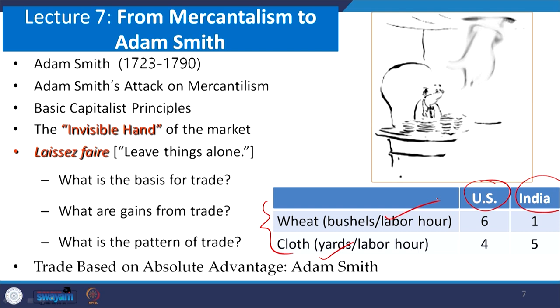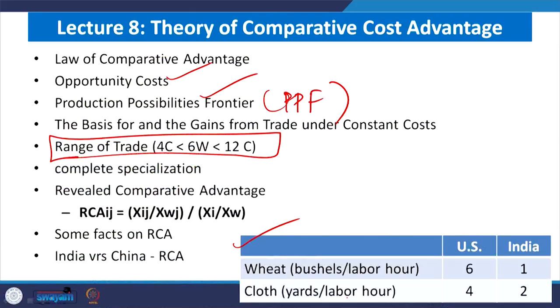In lecture number 8, as part of week number 2, we emphasized comparative cost advantage by David Ricardo. We talked about opportunity cost in detail and emphasized the production possibility frontier. We derived the diagram and placed the differences. From the example, you can verify the range of trade. Regarding the discussion of complete versus incomplete specialization, this is the theory based on complete specialization. Later on we also talked about revealed comparative advantage — a country's exports of a product to the world divided by total exports of that country, divided by the world equivalent.